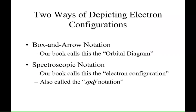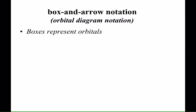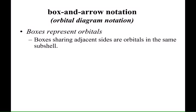Let's start with the box-and-arrow notation. Boxes will represent orbitals. If we have several boxes lined up in a row, sharing adjacent sides, those are orbitals in the same subshell. We call them degenerate orbitals.